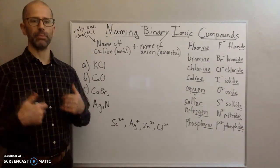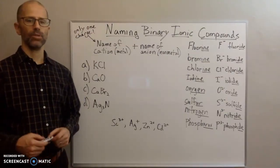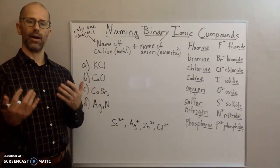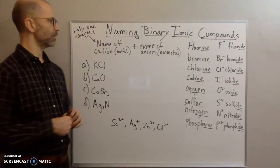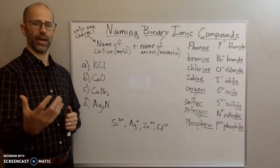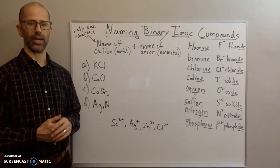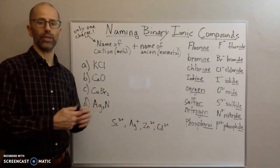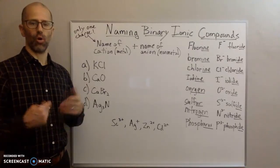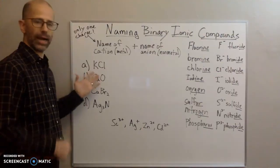Hello everyone, welcome back. I am Mr. Cobalt and today we are going to be talking about naming binary ionic compounds. By 'binary' I mean a compound that is made up of two atoms — that's why binary means two. We're going to have one ion or atom with a charge bonded with another atom that has a charge, so we're dealing with two atoms each with a charge. This will be compared to later compounds that have a polyatomic ion involved.